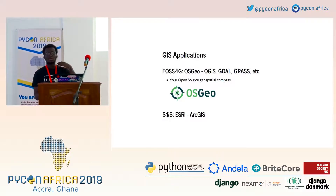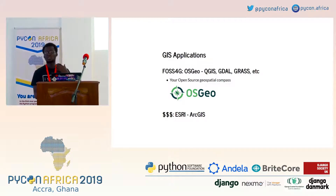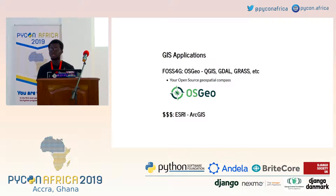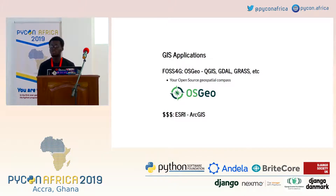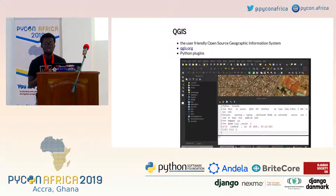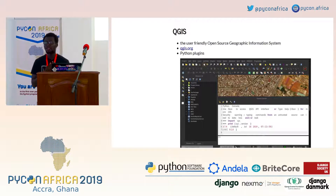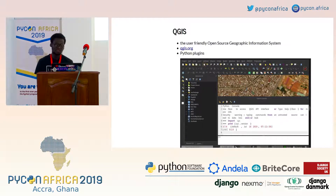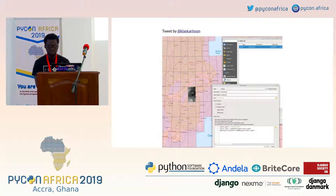GIS applications exist — you can't do everything from the terminal because it might not be friendly when you're starting. We have open source and proprietary ones. Esri is a big player in the proprietary space. OSGeo — the Open Source Geospatial Foundation — has QGIS. QGIS is one tool that loves Python at its core. The QGIS has an API built on top of Python, so you can see a Python console directly in the QGIS interface. Also, about 80% of plugins that extend QGIS functionality are built with Python.